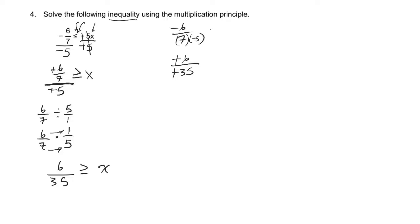multiply the bottoms together, that's 35. Okay, so in this case, six over 35 is greater than or equal to x. Or you could write it as x is less than or equal to six over 35. Notice when I switch sides, I have to switch that inequality too.